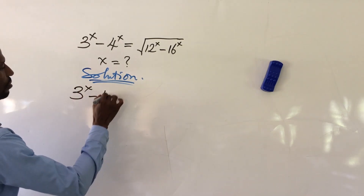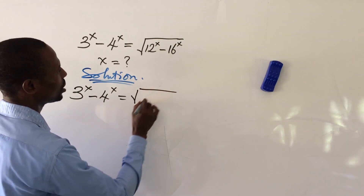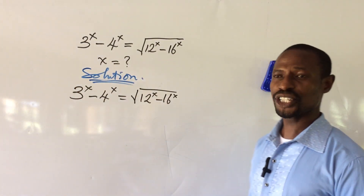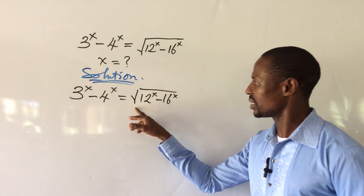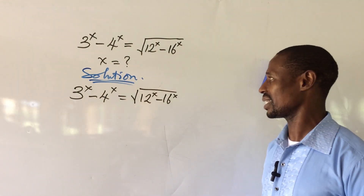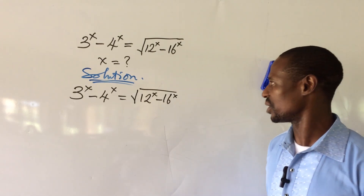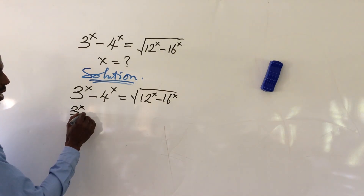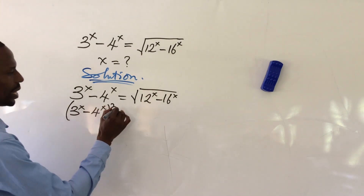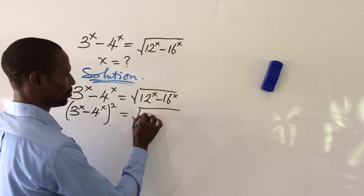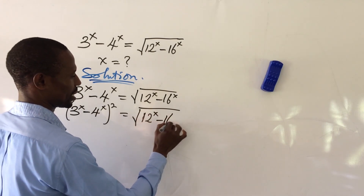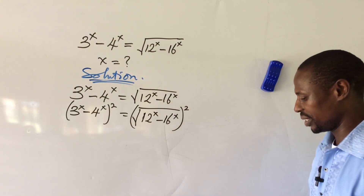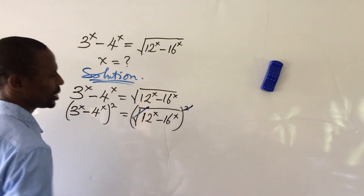We have 3 to the power of x minus 4 to the power of x equal to the square root of 12 to the power of x minus 16 to the power of x. The first thing we're going to do is take care of this radical — it's a square root. To eliminate it, we square both sides of the equation. So the first step gives us: (3^x minus 4^x) squared equals (sqrt(12^x minus 16^x)) squared. The radical and the square cancel each other.